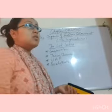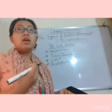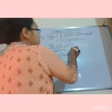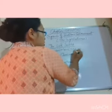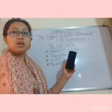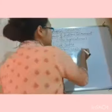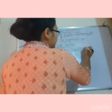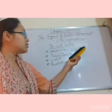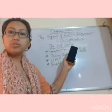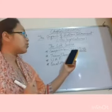Let's begin with the first topic — the composition of Lok Sabha. The maximum strength, or maximum seats, provided by the Constitution is 552. This is the total seats provided by the Constitution, but at present there are 545 members in Lok Sabha.